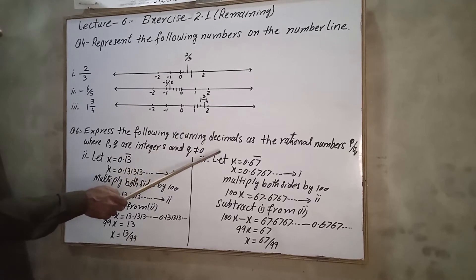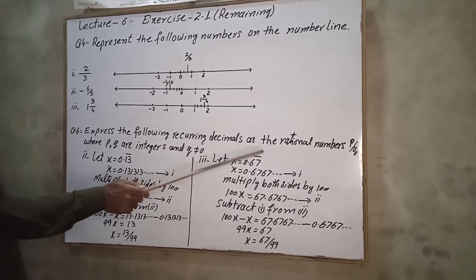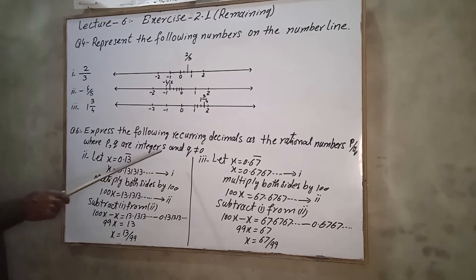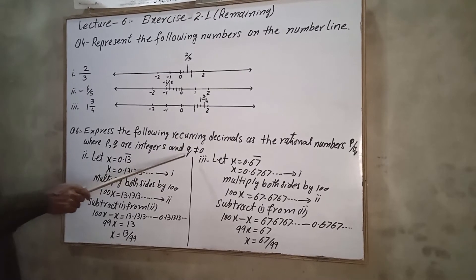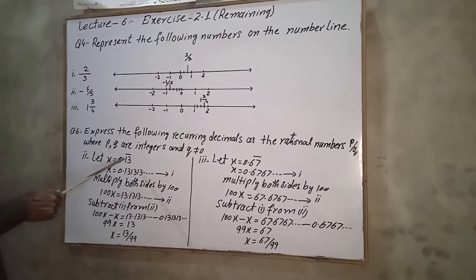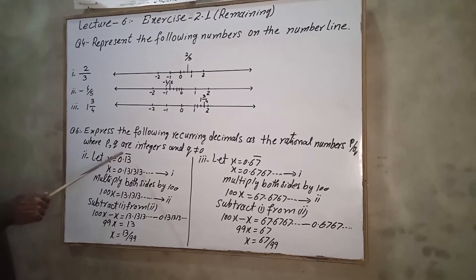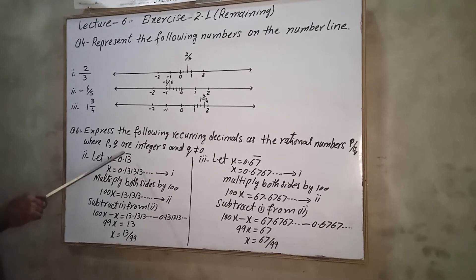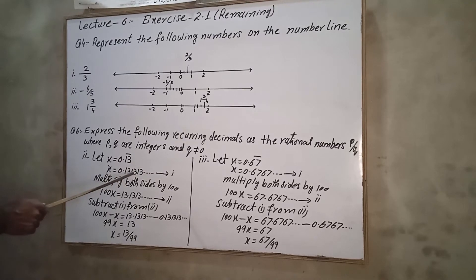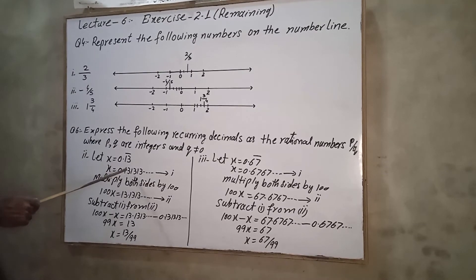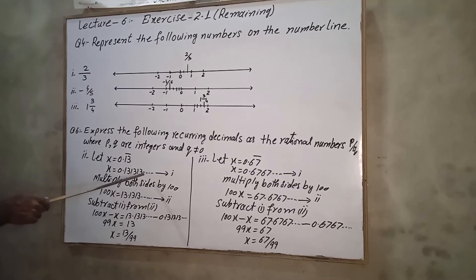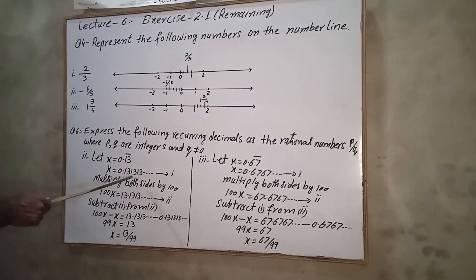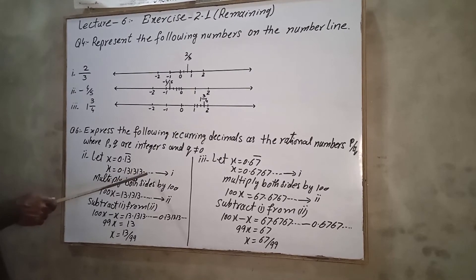Question 6: Express the following recurring decimals as rational numbers in the form p/q, where p and q are integers and q is not equal to zero. A recurring decimal has a dash which shows that the number is repeated continuously.